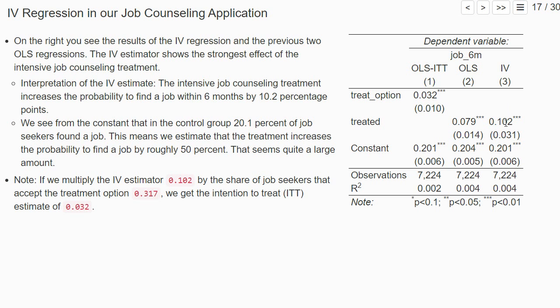So we can estimate the causal effect of being treated on the job outcome using an IV regression. Here we find an estimate of 0.102, meaning that intensive job counseling increases the probability to find a job within six months by 10.2 percentage points.